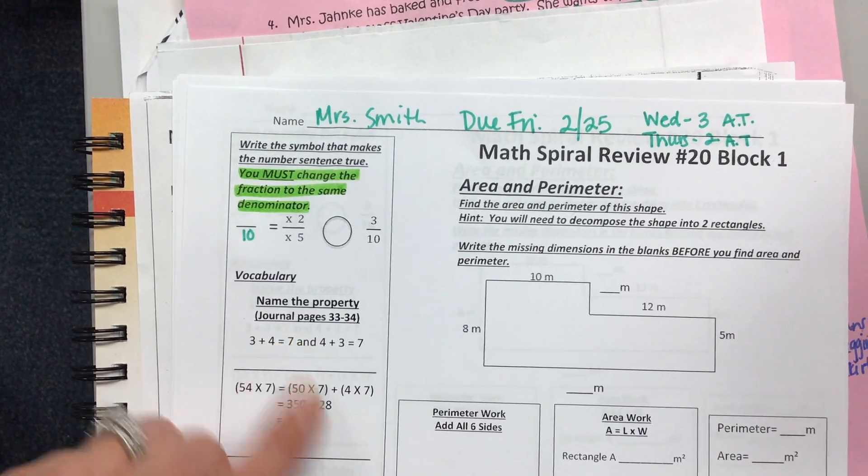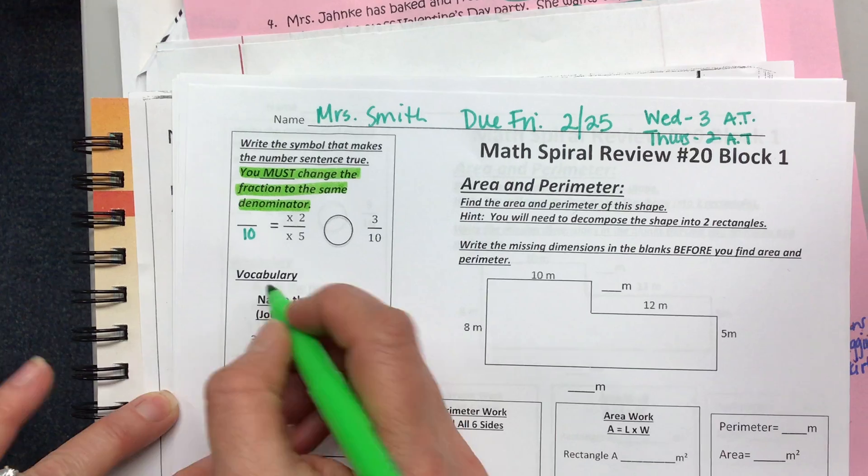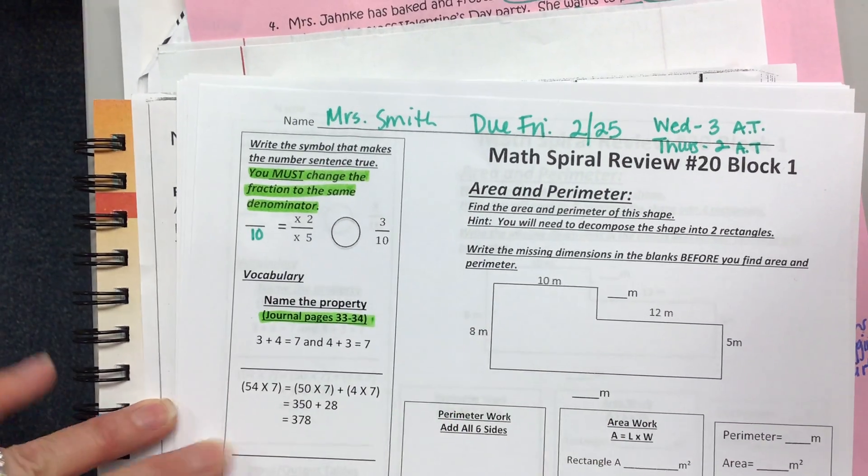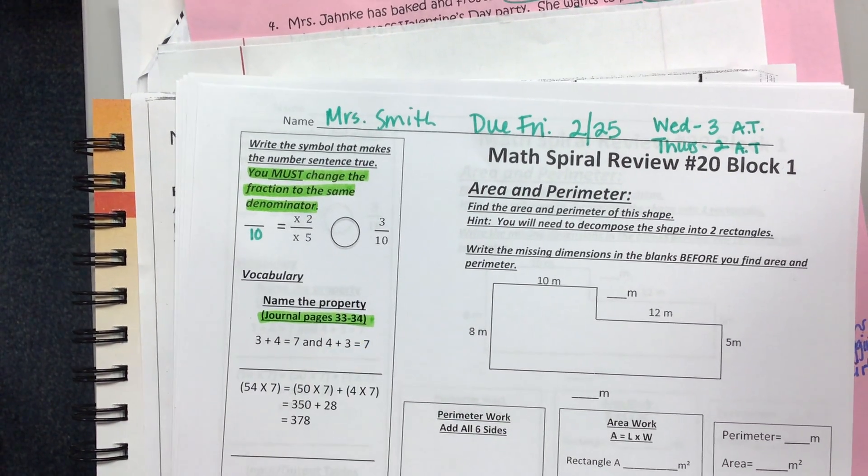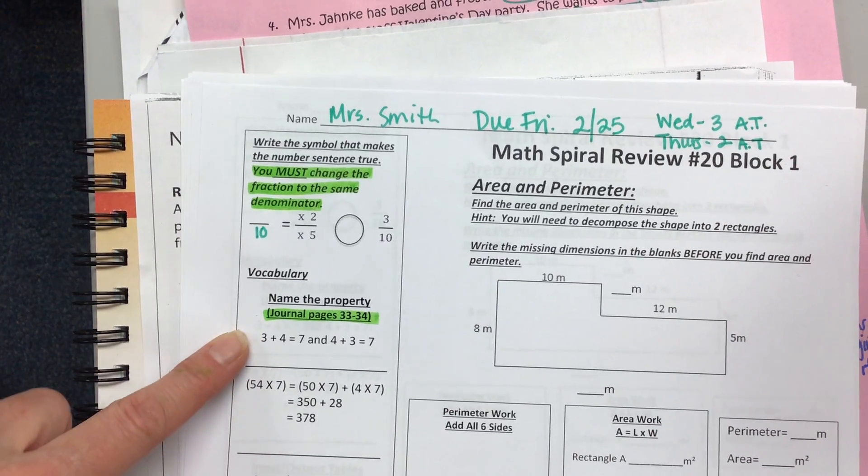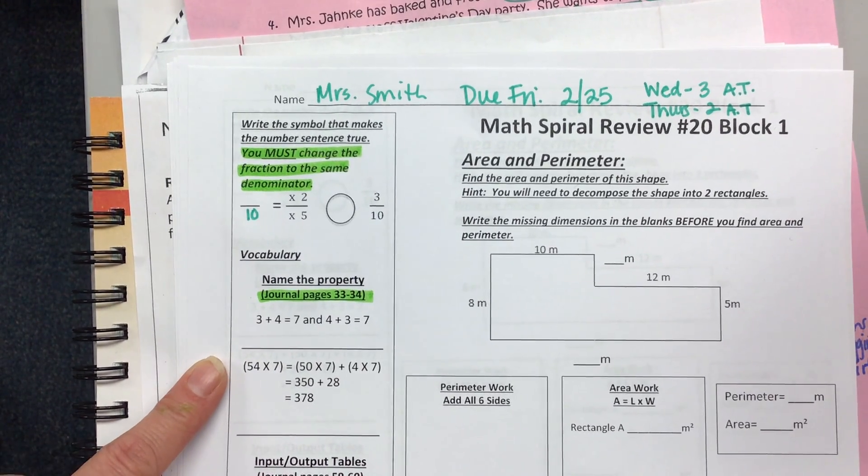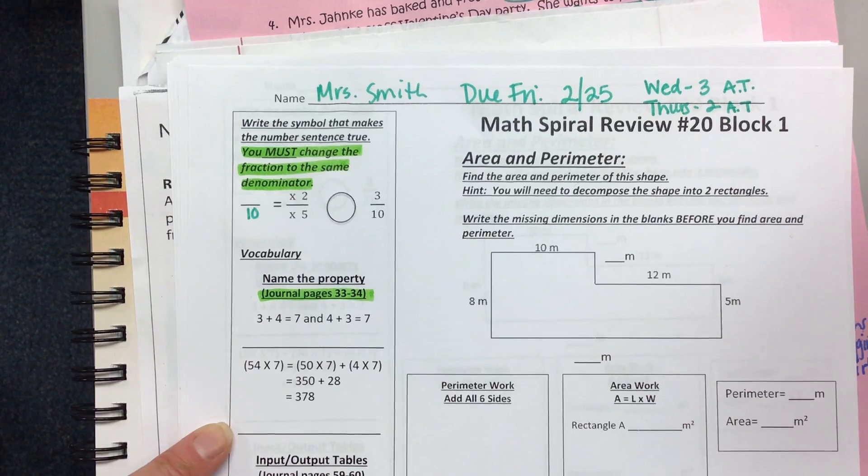Here we're naming properties. It has been a while since we have named properties. So please go back to those journal pages. Those should be spelled correctly. They are spelled correctly in your journal, and you should be able to correctly spell them.